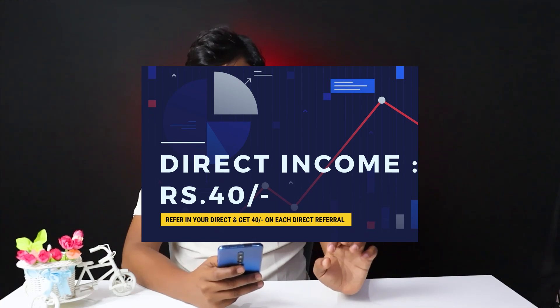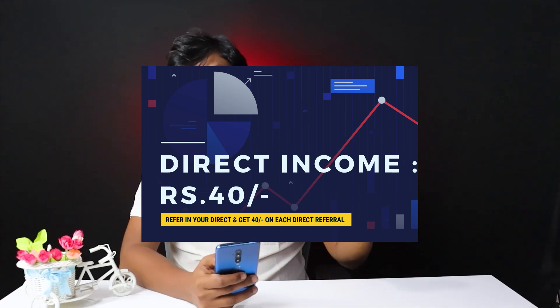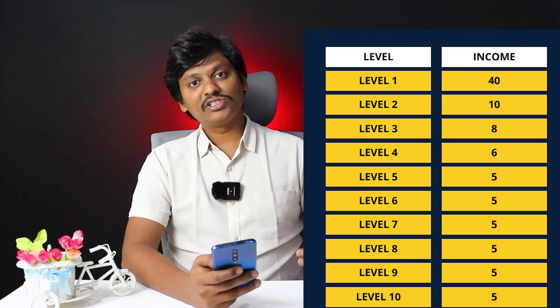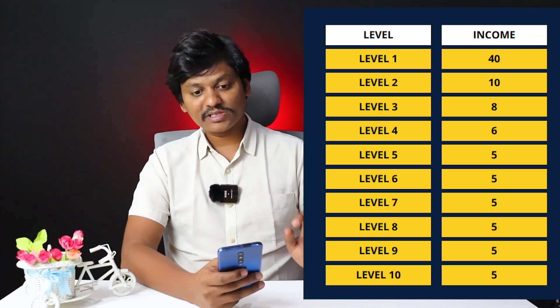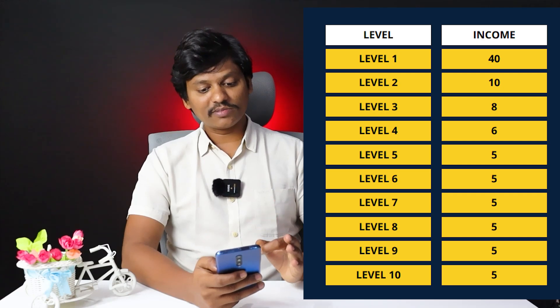There are only 600 rupees required for investors to join. After joining with 600 rupees, you will get a direct income of 50 rupees. Each investor earns 40 rupees. Level-wise income: level 1 is 40 rupees, level 2 is 10 rupees. If you join your friend and they join their friend, you get 10 rupees income. Level-wise: level 3 is 8 rupees, then 6 rupees, 5 rupees, and so on up to level 10.